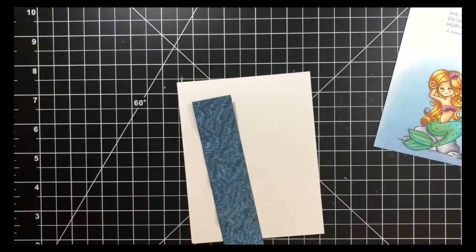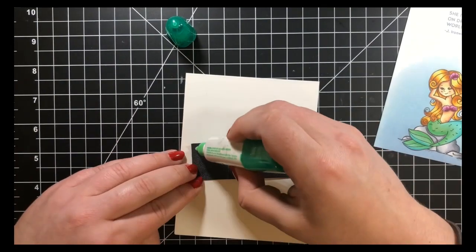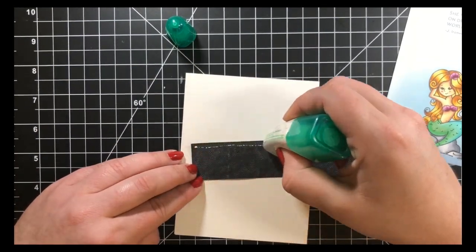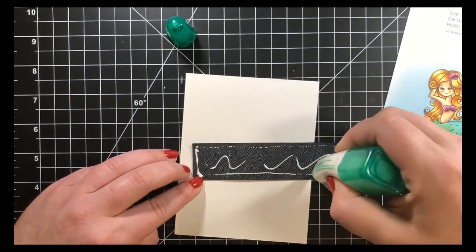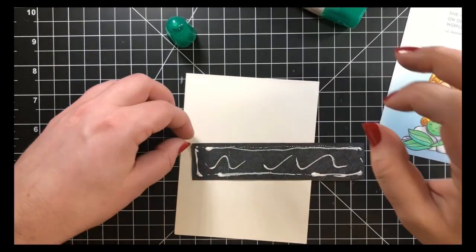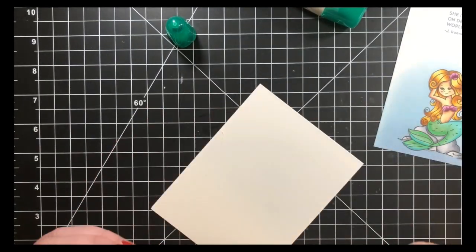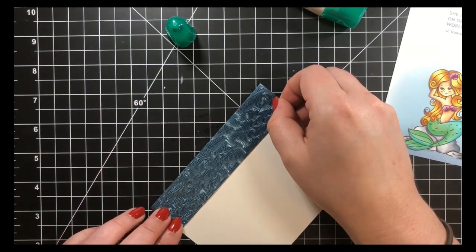Next, I'm taking just a strip of this embossed paper by Tonic. I'm using my Tombow Mono Multi Glue here and I have an A2 size top folding note card there and I'm just adhering that off to the left hand side.